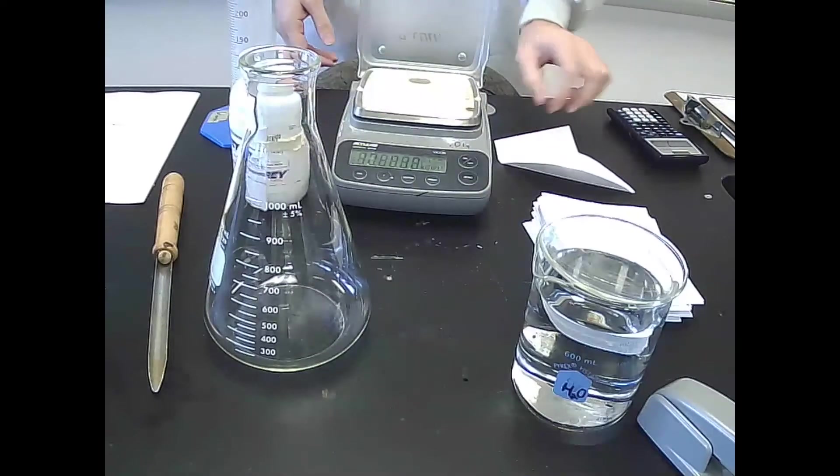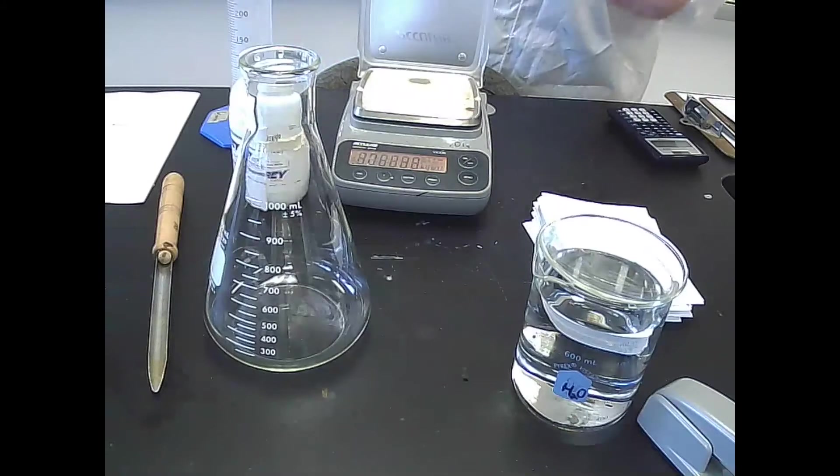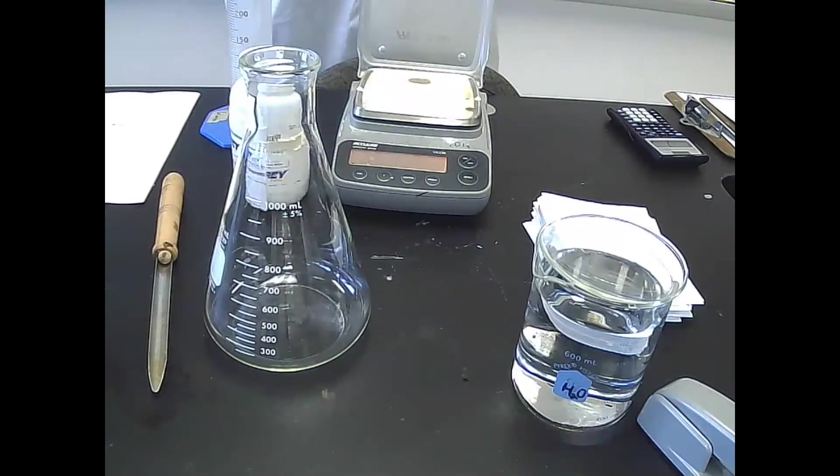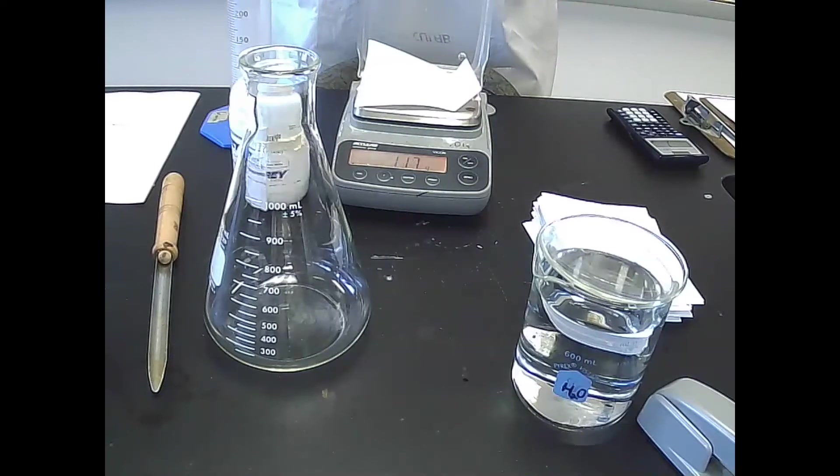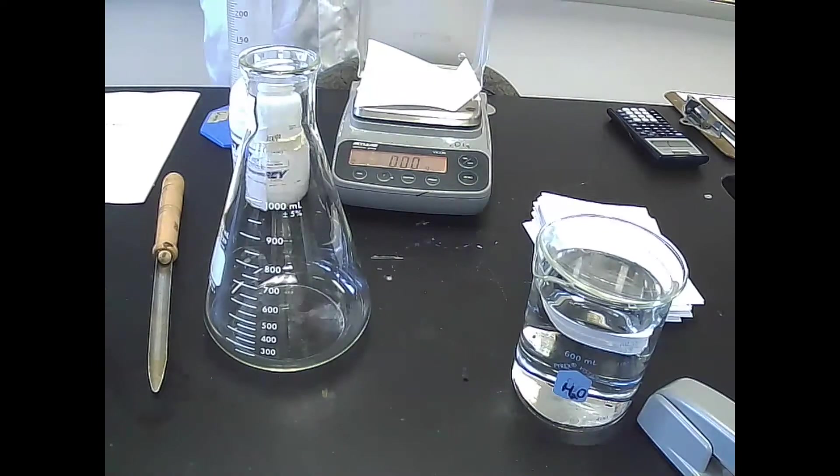I'm going to turn on my balance and give it a little bit of time to fully turn on. Once it reaches that 0.00, I will put the dish on top of it, give it a second, zero it out so it ignores the weight of the dish. Now, as you can see, this scale has two decimal places, but I only need 4.0. This gives me a leeway: 3.95 to 4.04. Either of those will round to 4.0, which is what I want.